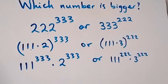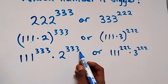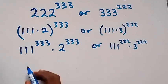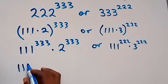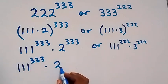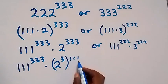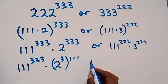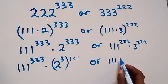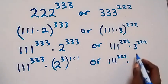In the next step we can rewrite 333 as 3 times 111. Then this becomes 111 raised to power 333 times 2 raised to power 3, then raised to power 111. Which one is bigger out of this? Then this one will now be 111 raised to power 222 times...